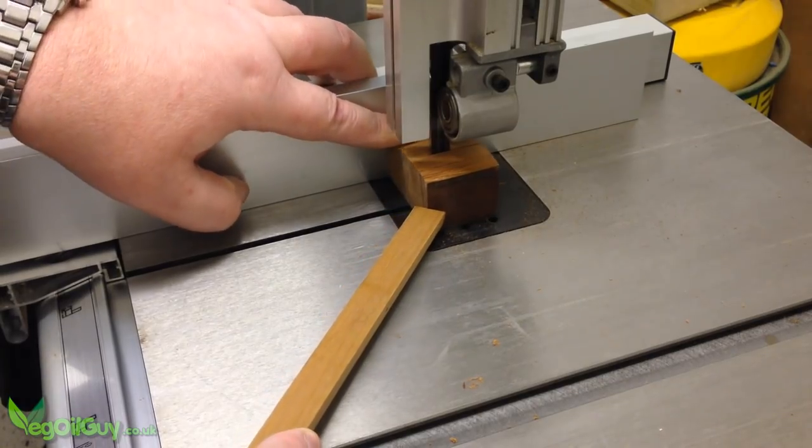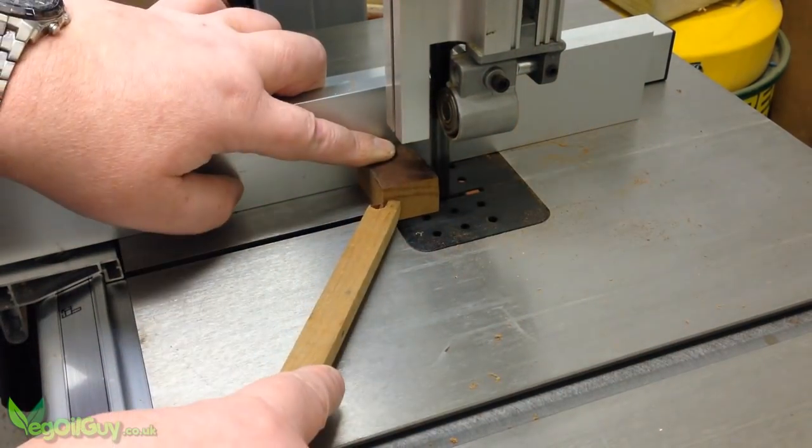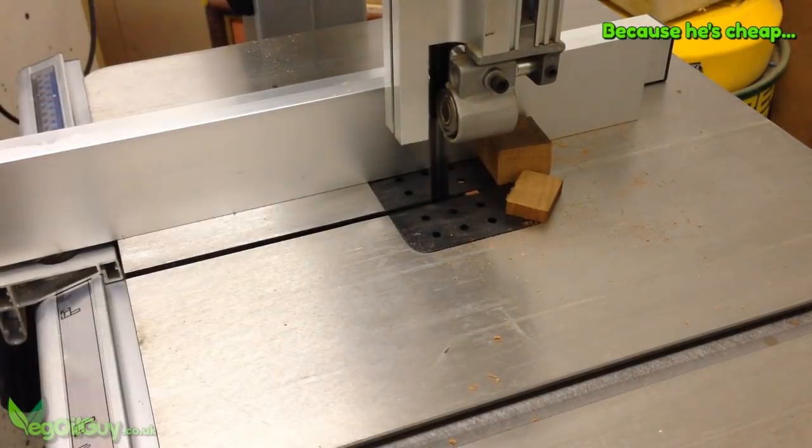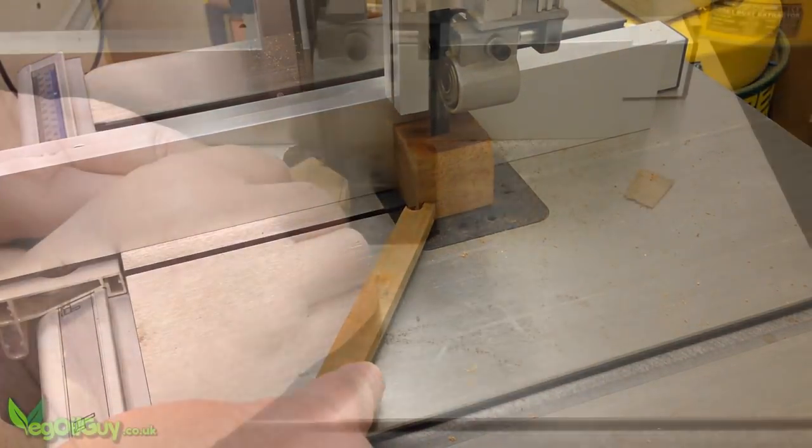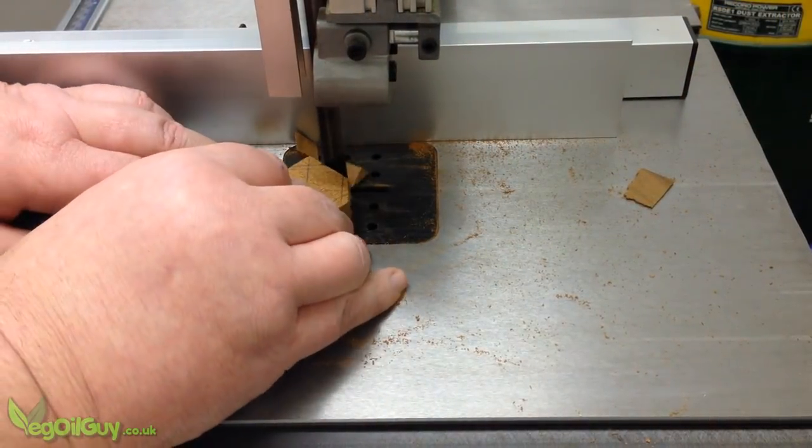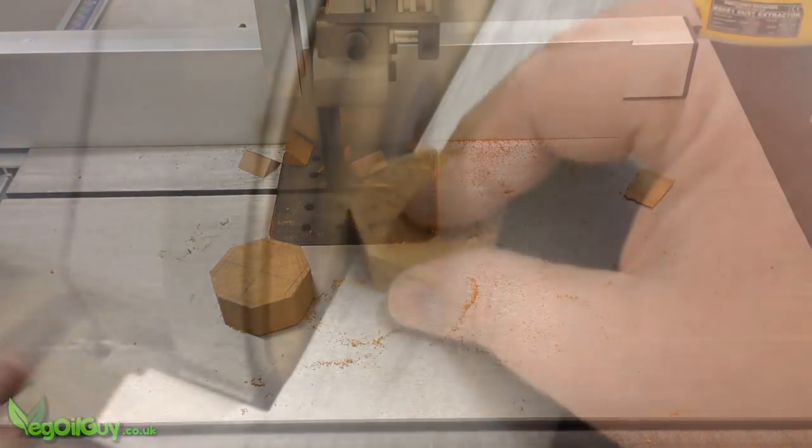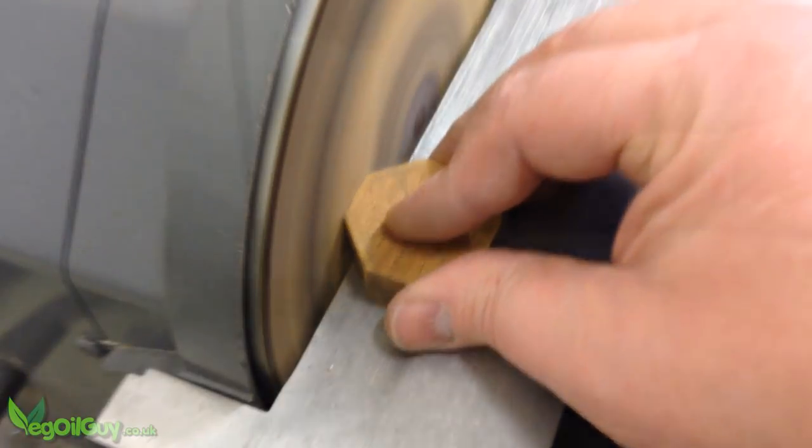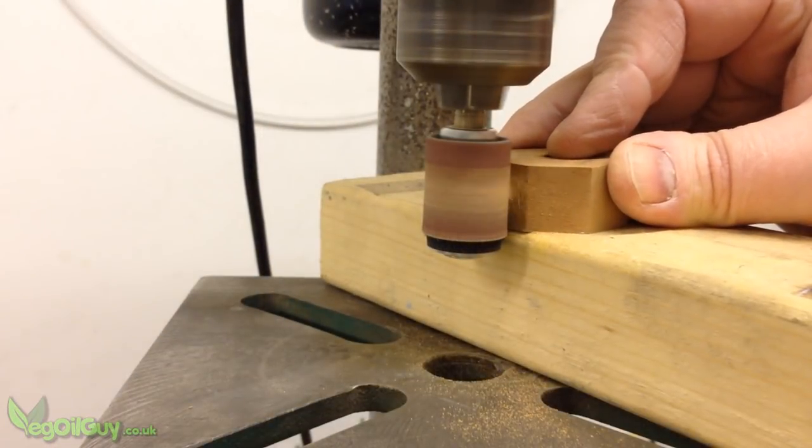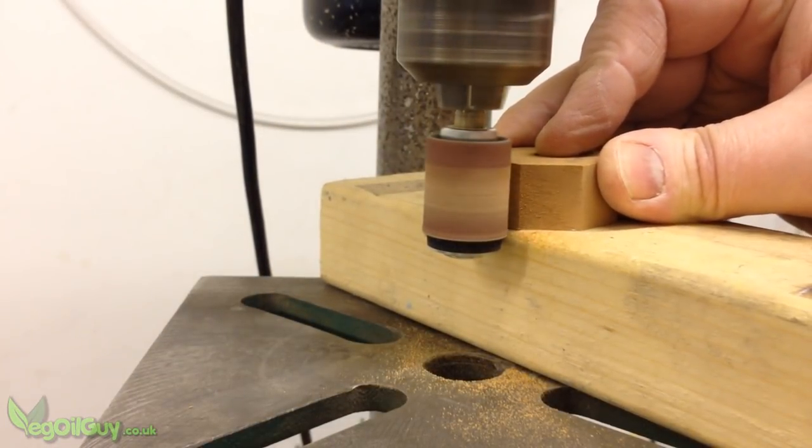You can buy threaded knobs but I decided to make one. I cut down a few scraps into different sized squares. The larger was trimmed to be roughly octagonal.